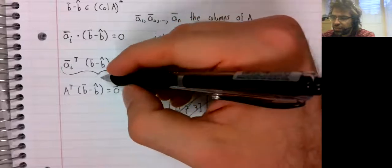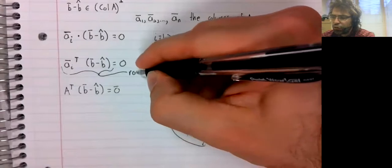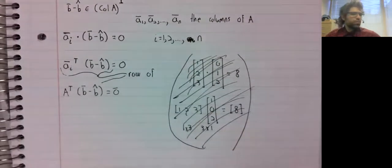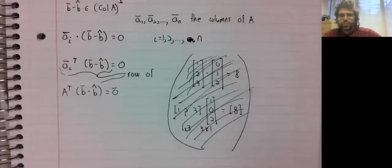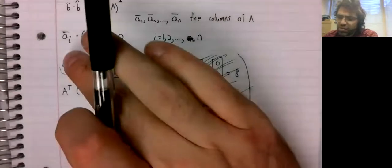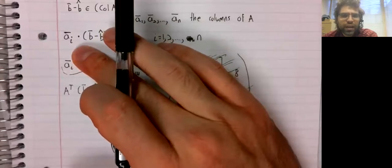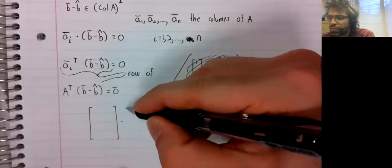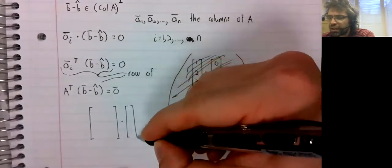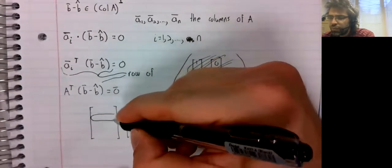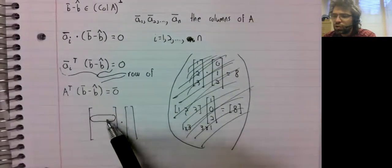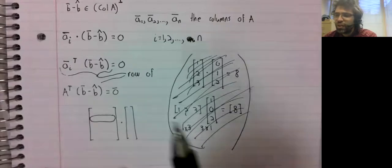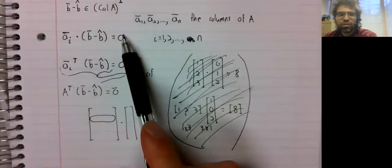This is a row of this. So remember that this was the column of A, so it's the ith column of A, so it's the ith row of A transpose. And when you multiply a matrix by a vector, you take the rows, you multiply component-wise and you add them together. That's a dot product.